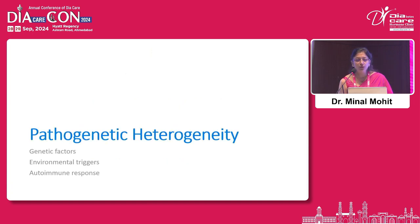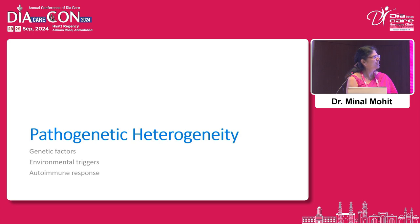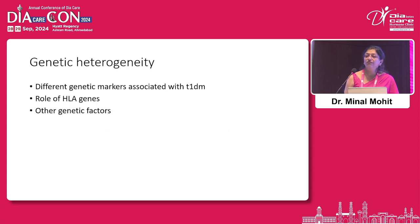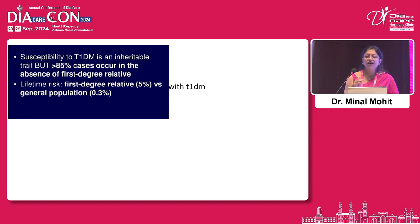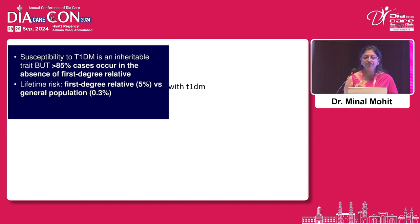Coming one by one — we are talking about pathogenetic heterogeneity. When we talk of pathogenetic heterogeneity, we talk about genetic factors, environmental triggers, and autoimmune response. Regarding genetic heterogeneity, we talk about the various genetic markers, the role of HLA genes, and other genetic factors. We all know that there is hardly a family history when we deal with type 1 diabetes — more than 85% of patients will come to you with no family history, and less than 5% will have a first degree relative. Still, we talk of genetics.